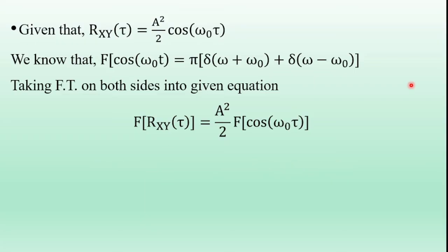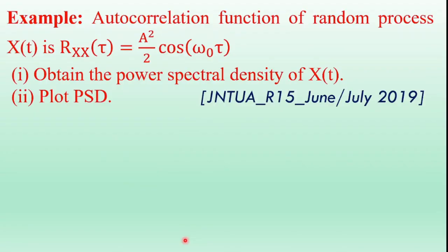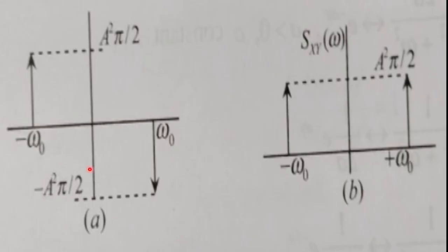Similarly, in the first part, this is the Sxy of omega. The impulse function exists at omega equals minus omega-naught and at plus omega-naught. At minus omega-naught, the strength of the signal is j*a-squared*pi over 2. At plus omega-naught, the strength of the signal is negative j*a-squared*pi over 2. At minus omega-naught the signal is positive — represented by the upward direction — and at plus omega-naught the strength is negative. This is the graphical representation.